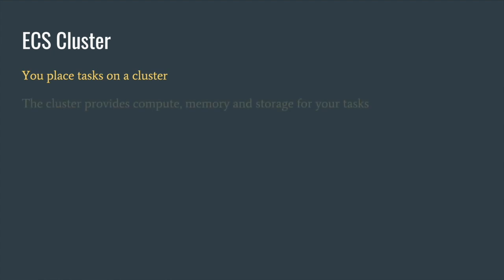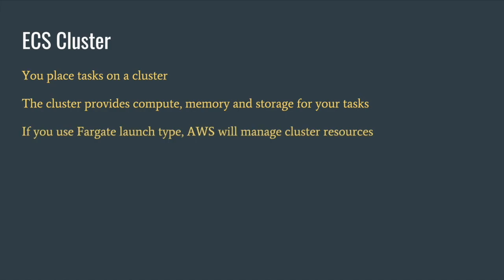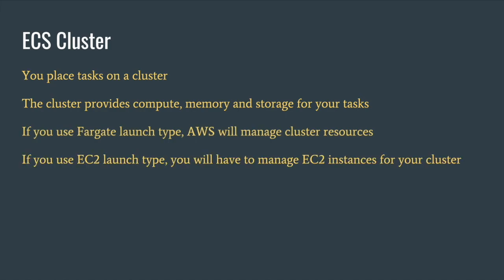About our ECS cluster, we are going to use Fargate launch type, letting AWS manage the compute, memory, and storage for our cluster. There are basically two launch types that ECS supports. The first one is EC2 launch type and the other one is Fargate launch type. If you want more control over your compute in the cluster, go for EC2. If not, you can simply use AWS Fargate where you don't have to worry about maintaining your compute resources, which is quite convenient.